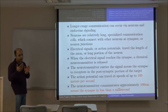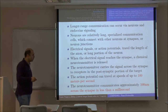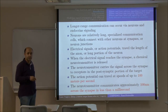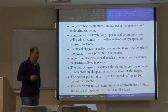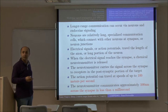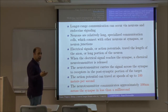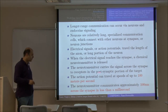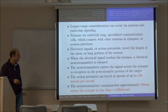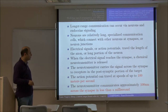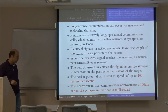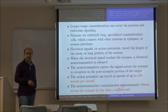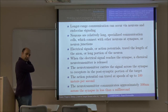In the synaptic region, a chemical neurotransmitter is released. These two neurons are very close but the way to transmit information from one to the other is through the release of chemical substances, with diffusion occurring across the synaptic gap. The neurotransmitters carry the signal — now translated from electrical to chemical — across the synaptic region to the membrane of the other neuron, to the dendrite, arriving at receptors on the postsynaptic portion. The action potential can travel at speeds of up to 100 meters per second, and the neurotransmitter communicates approximately 100 nanometers across the synapse in less than a millisecond.